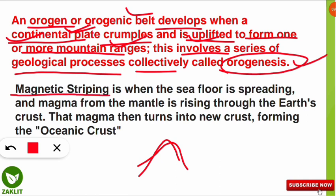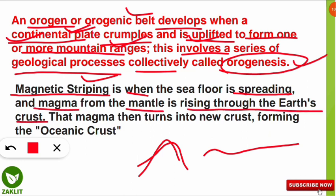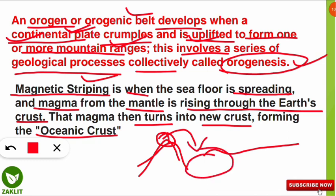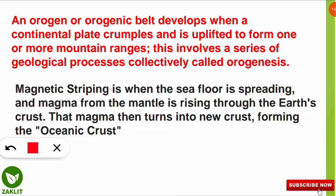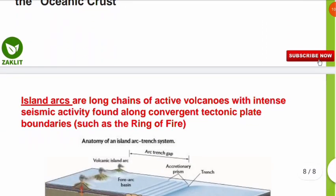Magnetic stripping is seen when the sea floor is spreading. Magma from the mantle rises through the earth's crust, and that magma then turns into new crust, forming the oceanic crust. So magma erupting from the mantle solidifies to form new oceanic crust — this process, associated with sea floor spreading, is called magnetic stripping.